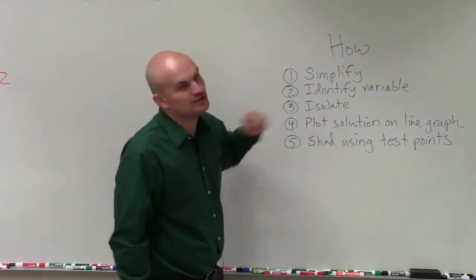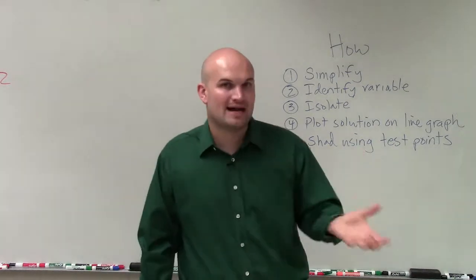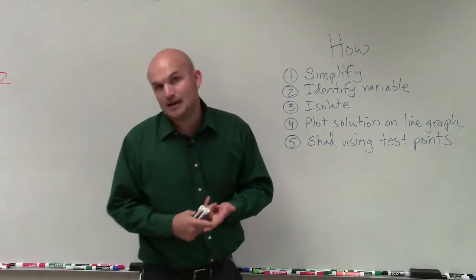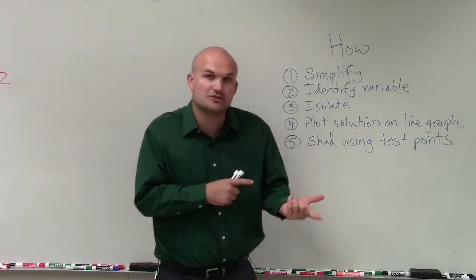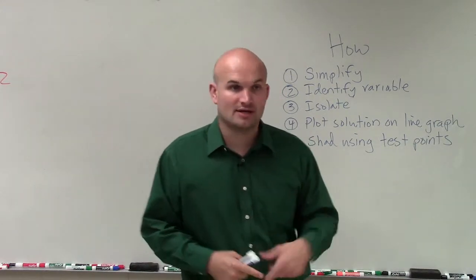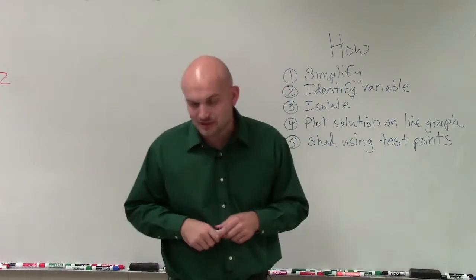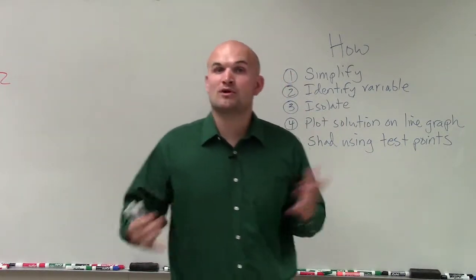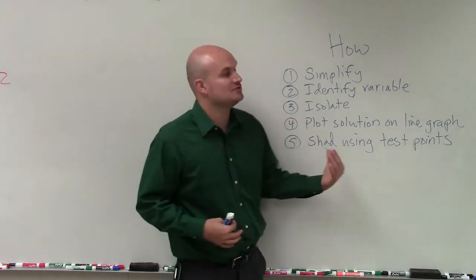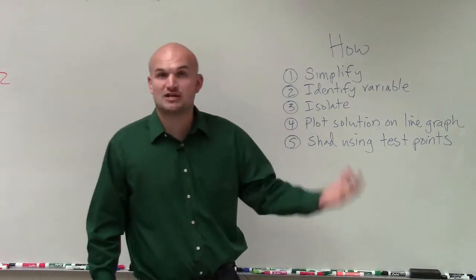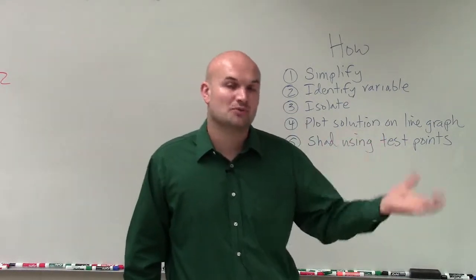Once we know that, we're going to isolate the variable, get the variable by itself. We do that by using our inverse operations, undoing what operations are being applied to the variable, using our properties of equality. When we undo an operation on one side, we have to make sure we undo it on the other side, as well as using the reverse order of operations. When we have a two-step equation, we undo addition and subtraction first before undoing multiplication and division.